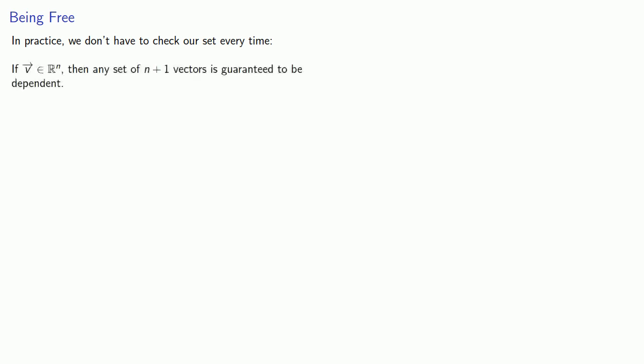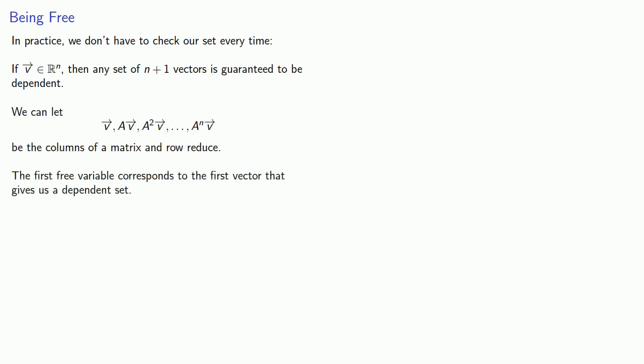If V is in R^n, then any set of n plus 1 vectors is guaranteed to be dependent. And so we can just form our set V, AV, A squared V, and so on, be the columns of a matrix and row reduce. And the first free variables correspond to the first vector that gives us a dependent set.